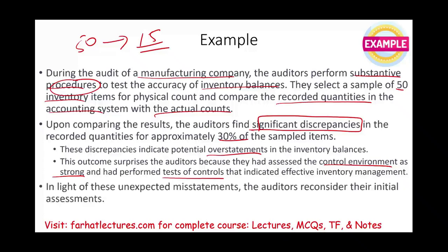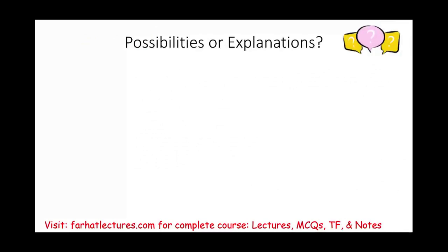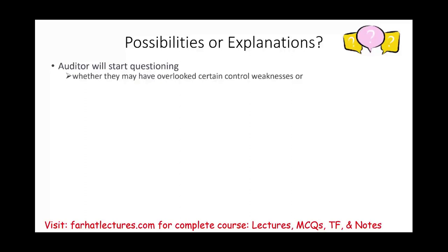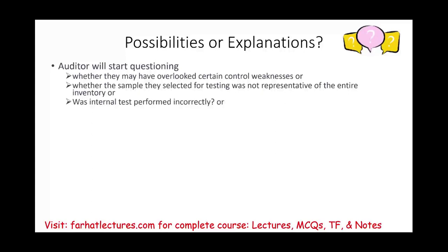When we got to substantive procedures and selected 50 items, 15 were misstated. We have to reassess our initial assessment of the control risk. The first thing to do is try to explain it — ask yourself whether you overlooked certain control weaknesses or did not do a good job assessing control risk.